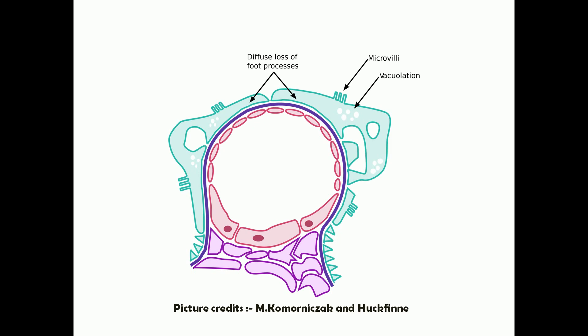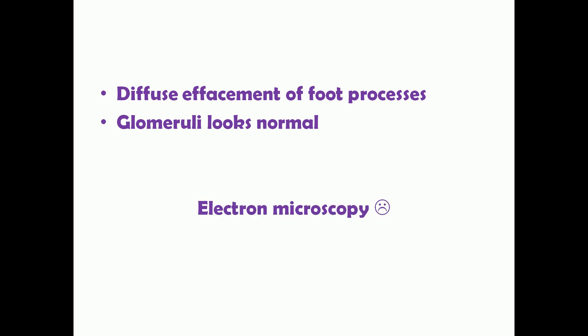This thinning out of foot processes leads to a defective glomerular wall barrier, which is what leads to nephrotic syndrome. Minimal change disease is due to diffuse effacement of foot processes of podocytes, but apart from that the glomeruli looks normal in light microscopy. If you do a PAS staining or H&E staining of the renal sample under light microscope, the glomeruli will look normal and you cannot find any pathology. To see the effacement of foot processes, you need to do electron microscopy — though that's not feasible as many centers don't have access to it.